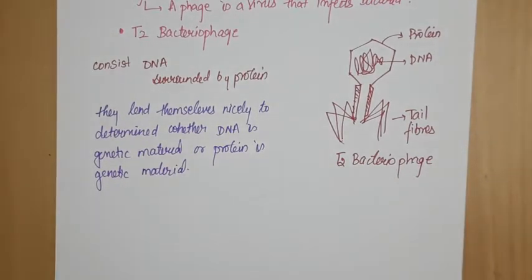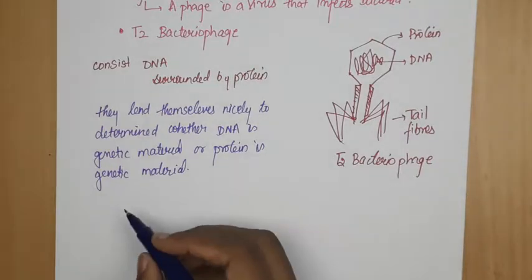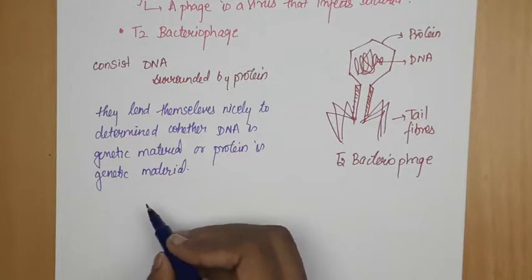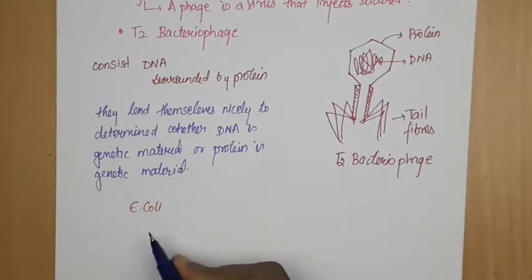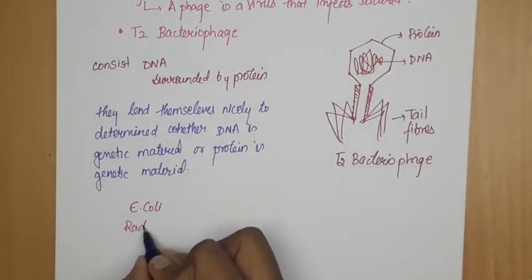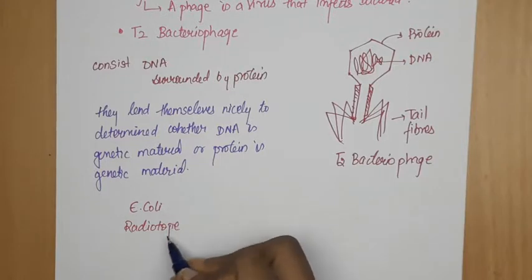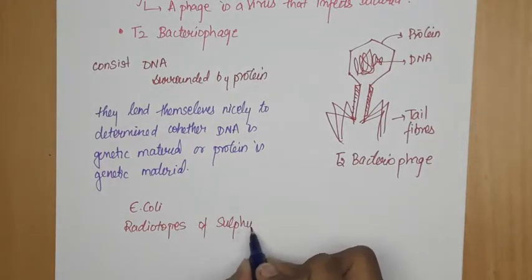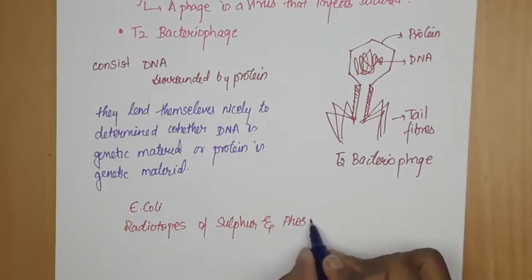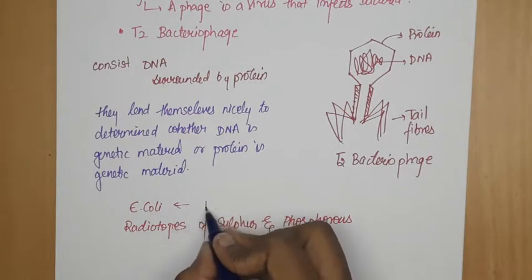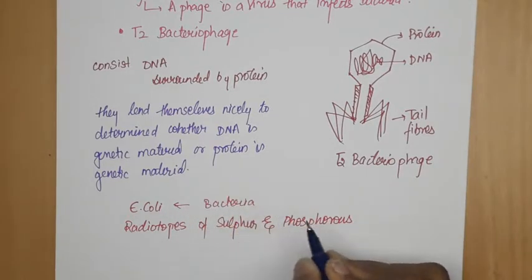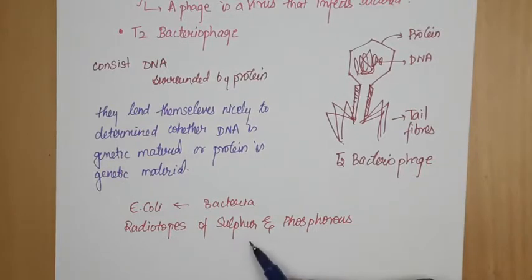For this experiment they used bacteria called E. coli. And they used radioisotopes — sulfur and phosphorus.